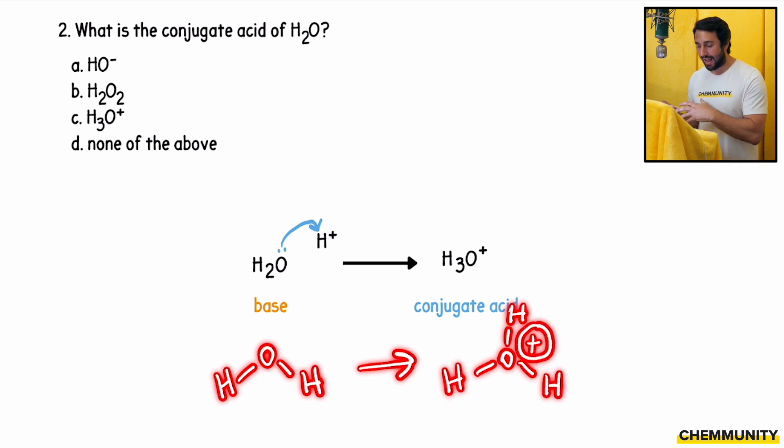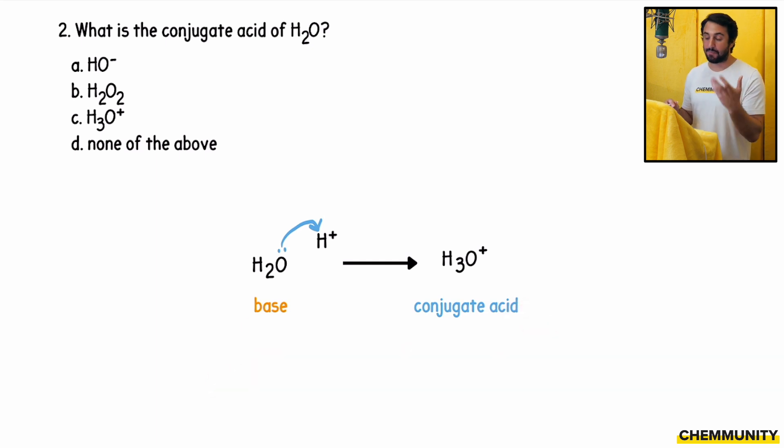That is going to give us H3O+. In order to get the conjugate acid of something, you make it act as a base, and if something is acting as a base, it is accepting a proton, and then you show the conjugate acid as the thing after having added a proton to it. H2O becomes H3O+, the hydronium ion.